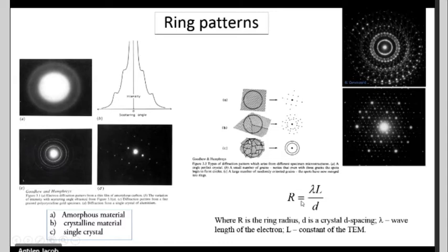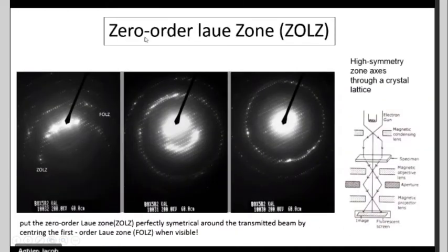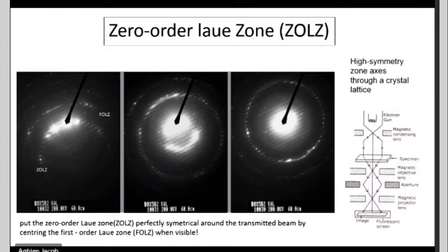The ring radius formula is: ring radius = lambda × L / d, where L is the camera length and d is the d-spacing of the crystal. One important concept to know is the zero-order Laue zone (ZOLZ). This is the highly symmetrical arrangement we can achieve by tilting the sample using the alpha angle, bringing the crystal to a perfect symmetrical orientation.